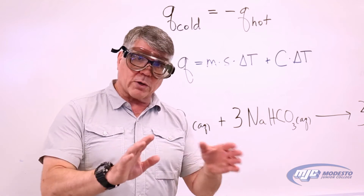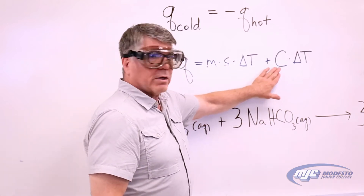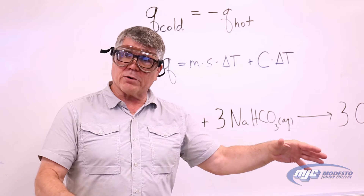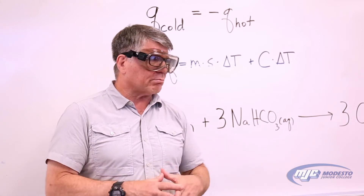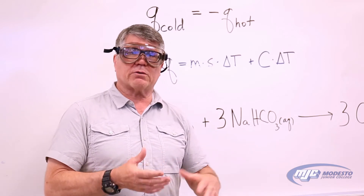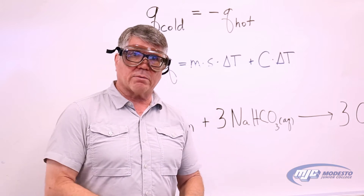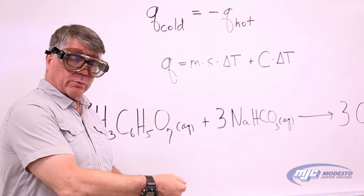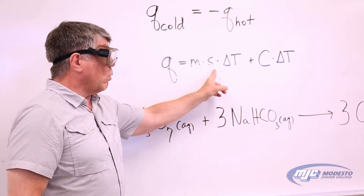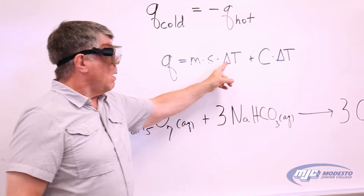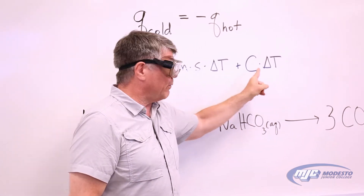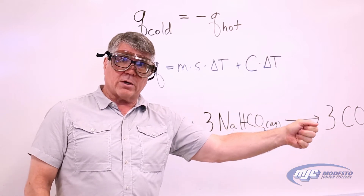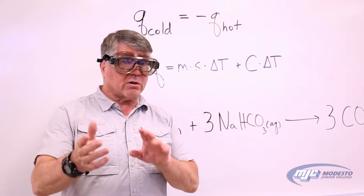The calorimeter constant C is how much energy it takes to raise the temperature of the whole calorimeter by one degree Celsius. The calorimeter is made of metal, styrofoam, plastic, and includes a magnetic stir bar. When we put something hot into the calorimeter with cold water, energy goes into the water — calculated as mSΔT — plus some goes into the calorimeter itself, which is the CΔT term. Adding those two gives us how much energy came out of the hot object.